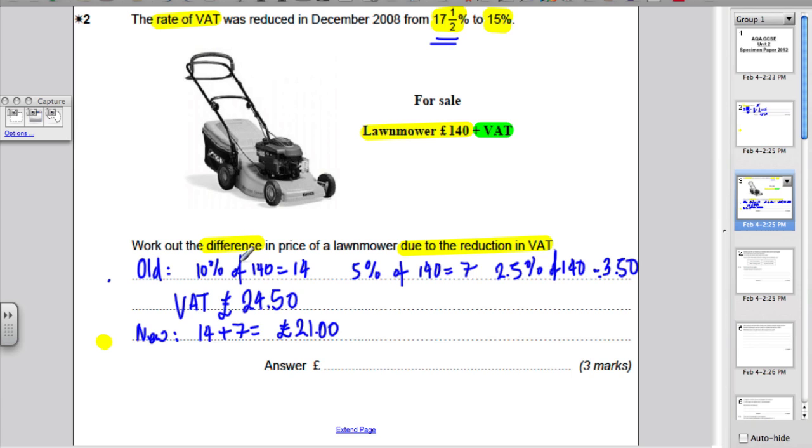Difference means the bigger number take away the smaller number. So, the difference is £24.50 subtract £21, which is equal to £3.50. Do note in the exam, you cannot write 3.5. You will lose a mark because this is a money question. The answer is £3.50.